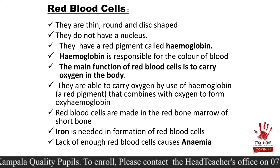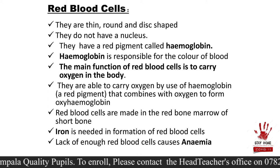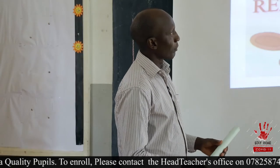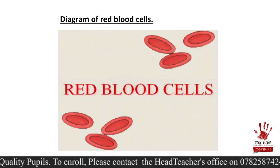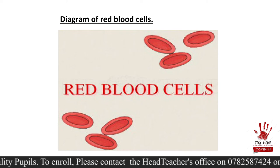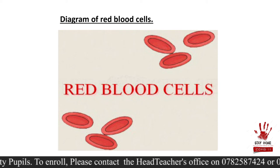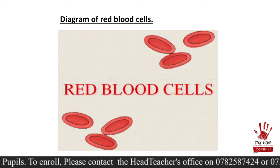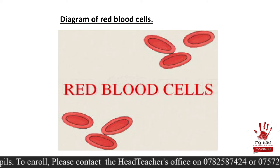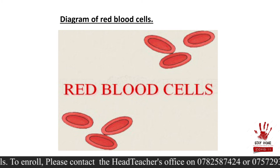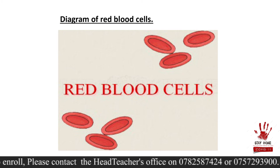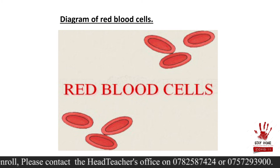Let's look at what our red blood cells look like. You can see the color — they are red, they are like a disc, and they don't have a nucleus. This is what our red blood cells look like.